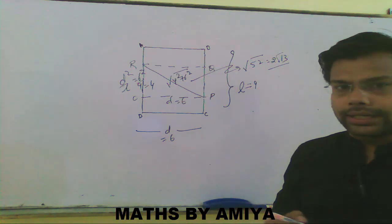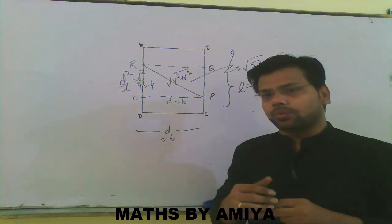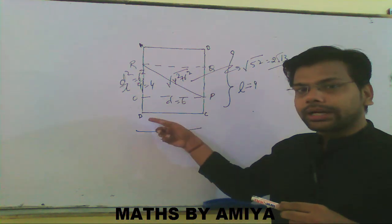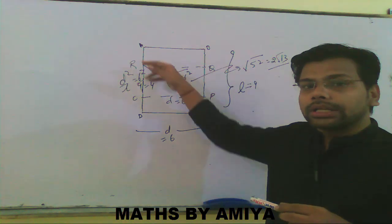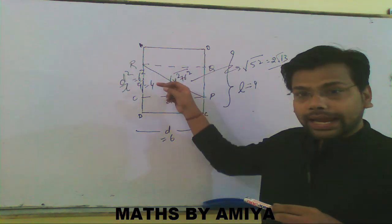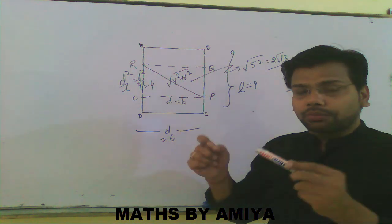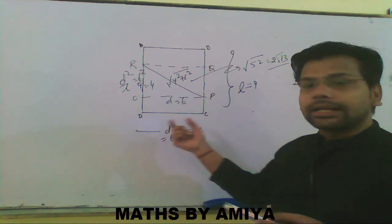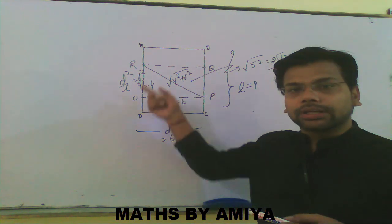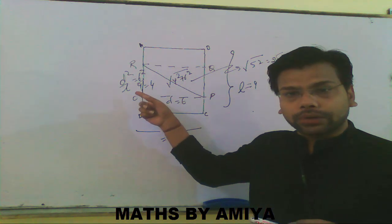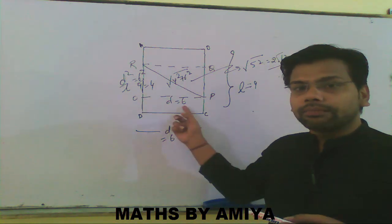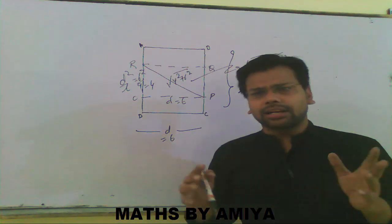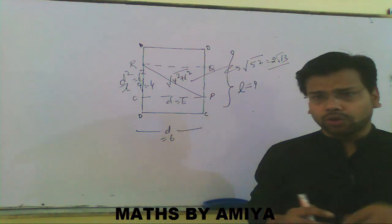So the length of crease is 2√13. The direct formula is: if width is d and you fold D to B, then the perpendicular side OR = d² / l, where d is smaller than l (that's why it's the width). With OR = d²/l and base = d, we use Pythagoras to find the crease length. Our answer is 2√13.